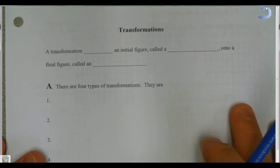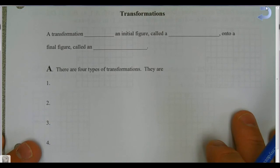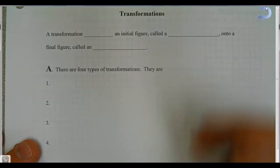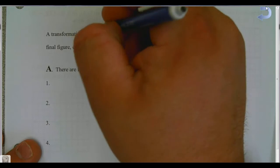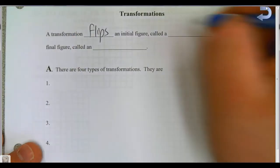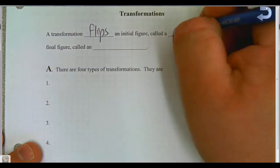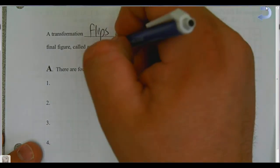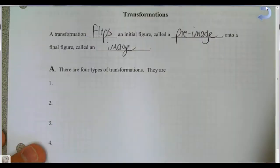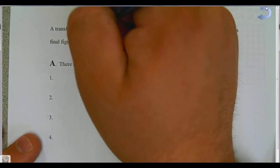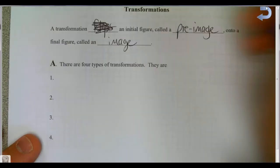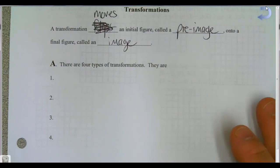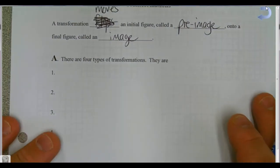So now let's get into transformations. A transformation moves an initial figure called a pre-image onto a final figure called an image. There are four types of transformations that you've already studied before.